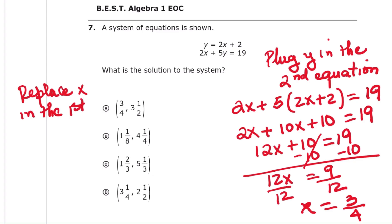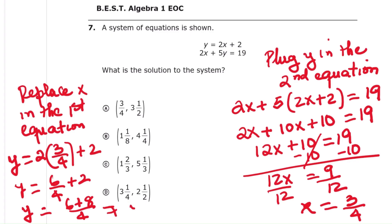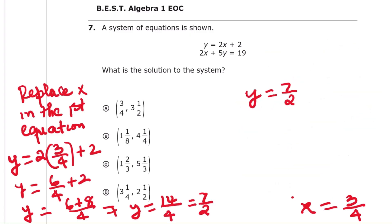Step 6, replace the value of x in the first equation. y equals 2 times 3 fourths plus 2. That equals 6 fourths plus 2. Using the same denominator, write 2 as 8 fourths. So y equals 6 plus 8 over 4, which is 14 over 4. Simplify 14 over 4 to 7 over 2. 7 over 2 is the same as 3 and 1 half. Final solution, x equals 3 fourths and y equals 3 and 1 half. Answer, choice A.